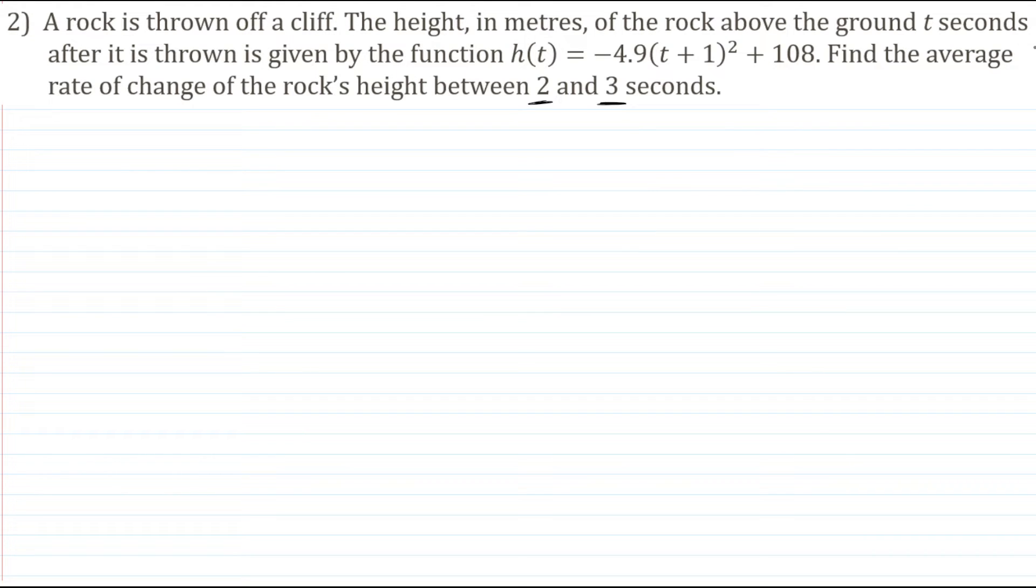Well, let's take a look here. We'll start by saying average rate of change equals, now we know it's a slope, which is rise over run. Here, our rise refers to our change in height, so our difference in height values, and our run is the change in time. Okay, the difference between our two time values.